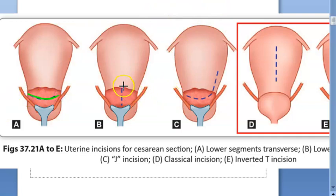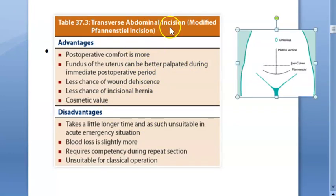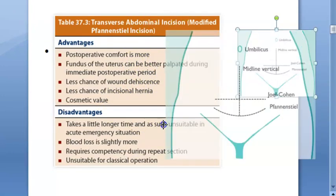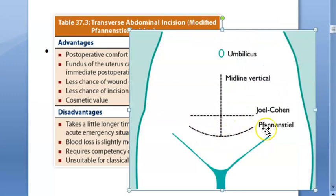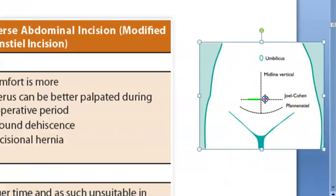There are various types of incisions in the lower segment, including transverse, vertical, and J-incision. Regarding abdominal incisions, the transverse abdominal incision is referred to as the Pfannenstiel incision. The modified Pfannenstiel incision is also a transverse abdominal incision. Let us look at its benefits.